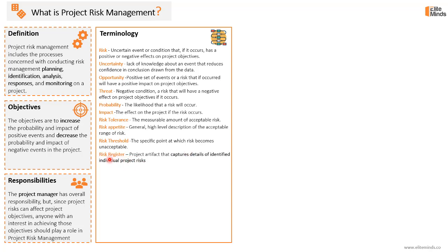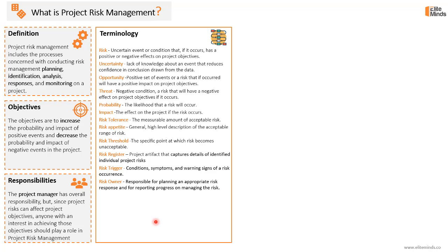The risk register is a very important project artifact where all identified individual project risks are documented with all relevant details. If you want to know the risks in a specific project, you just ask for the risk register. The risk trigger is defined as conditions, symptoms, and warning signs of a risk occurrence — an early warning sign that a risk is about to occur. The risk owner is the person responsible for planning an appropriate risk response, reporting progress on managing the risk, and ensuring the response will be implemented once the risk occurs.